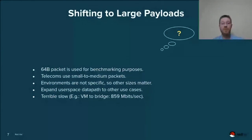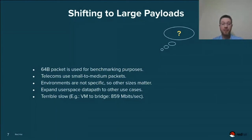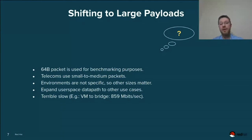We want to expand the user space data path to other use cases as well. For example, if you want to send packets from a virtual machine to a bridge port, you only get 860 megabits per second — which by today's standards is pretty slow.